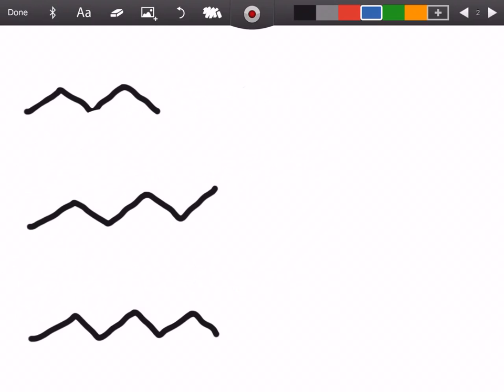We're going to add a carbon every single time. Two, three, four, and five, giving us pentane. Penta being the suffix for five.